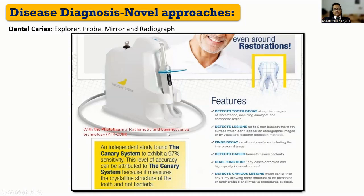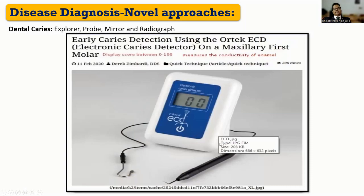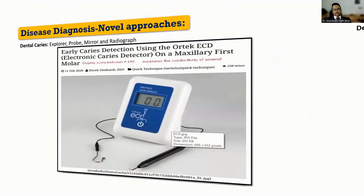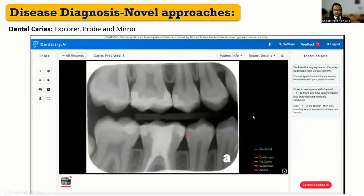This device, which uses photothermal radiometry and luminescence technology, and another device depicted here—which looks like an electronic apex locator but is actually an electronic caries detection system—is capable of detecting root dentine caries. Along with these novel approaches, AI-based systems have also been introduced, like Dentistry.ai, which is capable of diagnosing and detecting dental caries in interproximal regions from bitewing radiographs uploaded to the system.